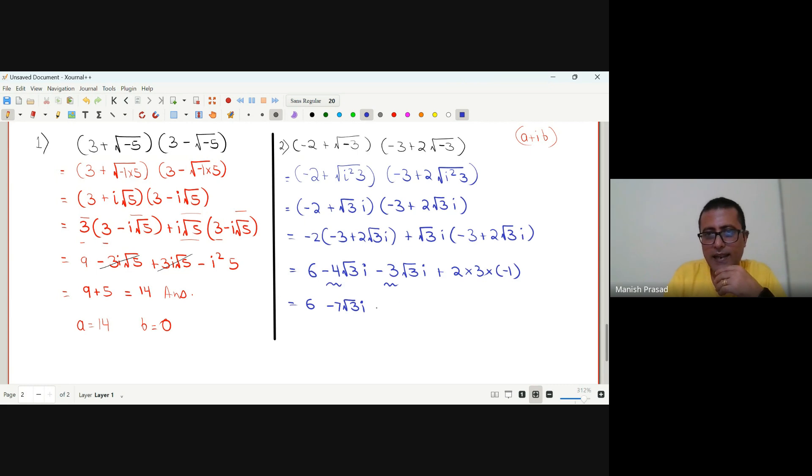Negative 6, positive 6, positive 6, and negative 6. The answer is: This means here a is 0 and b is minus 7 root 3.